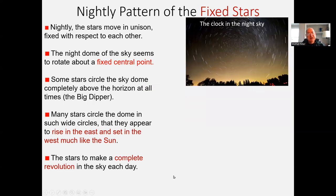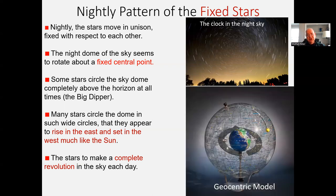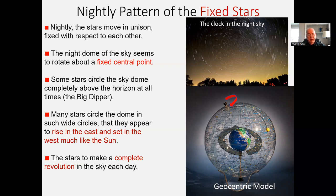Starting from the basics: the nightly pattern of the fixed stars is they simply go around and around the North Star, the central point. It looks like a dome, a half dome to us. Some stars are always above the horizon, like the North Star and the Big Dipper — stars close to the North Star never dip below the horizon. But other constellations are so far from the North Star that they seem to rise in the east and set in the west. This motion completes once a day. In the geocentric model, the Earth is in the center and this dome is a sphere all around us, turning once a day. Not only do the stars turn once a day, but all the planets are also turned around once a day.